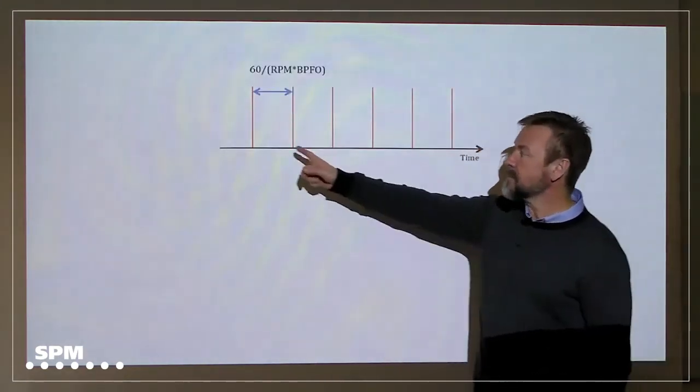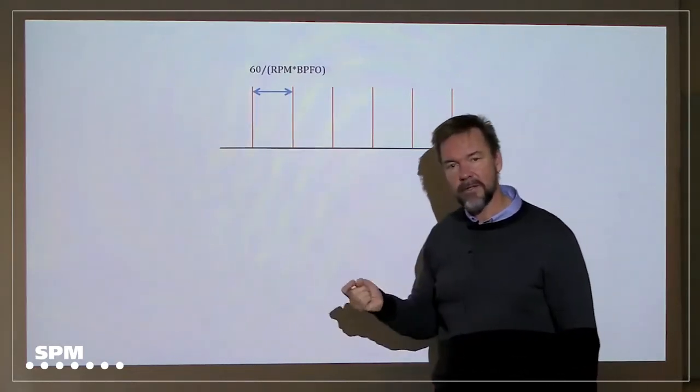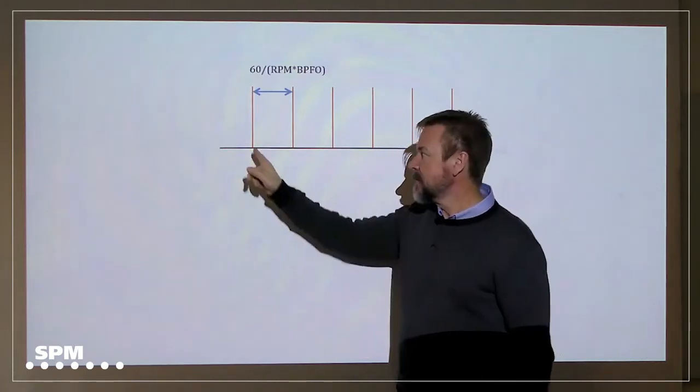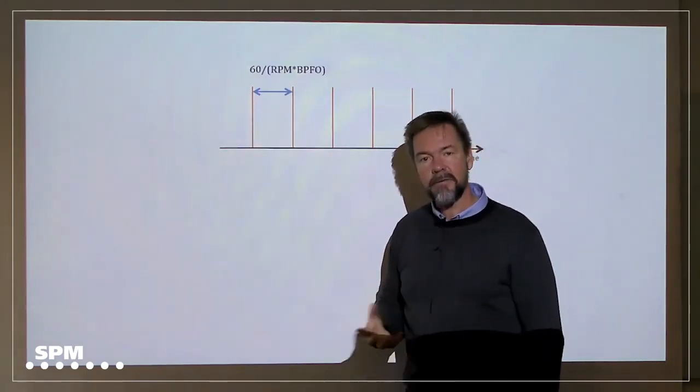Now, however, if you have a time signal that looks like this, there's an impact here, impact there, impact there, that is very strong. Very, very steep change in the amplitude here. And if you make an FFT of this one,